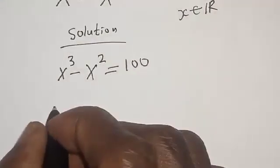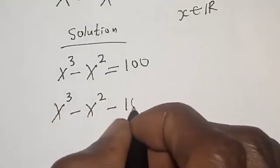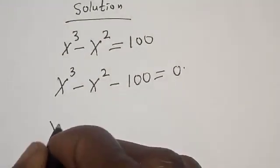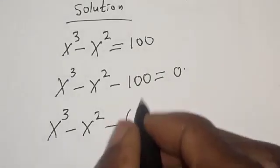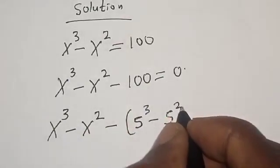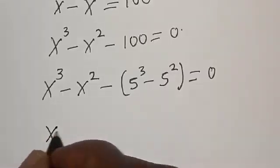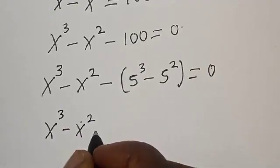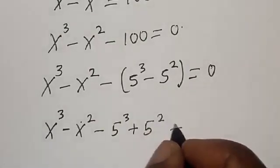Then we have x raised to power 3 minus x squared minus 100 is equal to 0. Now, this can be expressed as x raised to power 3 minus x squared minus 5 raised to power 3 plus 5 squared is equal to 0.